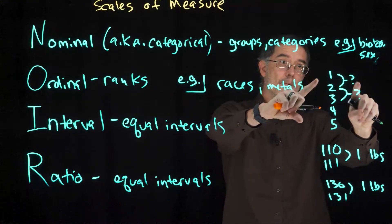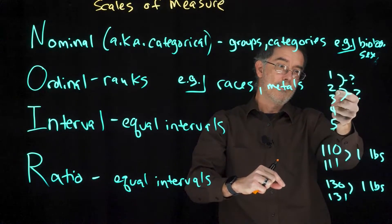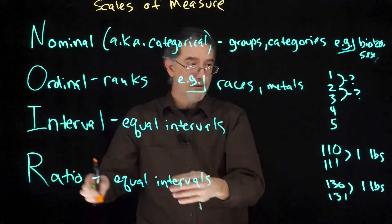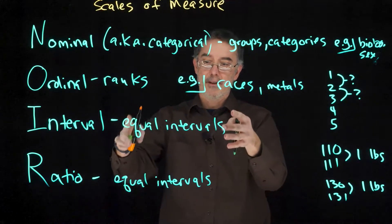Notice ranks, or ordinal variables, they do not have equal intervals. You do not know how much distance is between the 1 and the 2 and the 2 and the 3. For both interval and ratio, the distances are always the same. They have equal intervals.